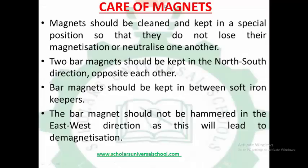Now, care of magnets. Magnets should be cleaned and kept in a special position so that they do not lose their magnetization or neutralize one another. Two bar magnets should be kept in the north-south direction opposite each other, allowing them to attract in order to retain their magnetism. Two bar magnets should be kept between soft iron keepers to retain the magnetism. Two bar magnets should not be stored in the east-west direction, as this will lead to demagnetization.